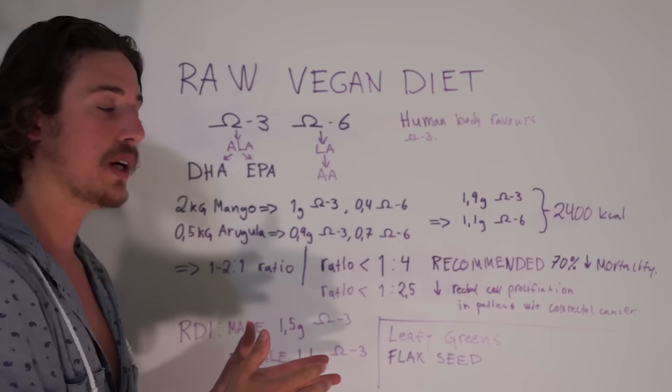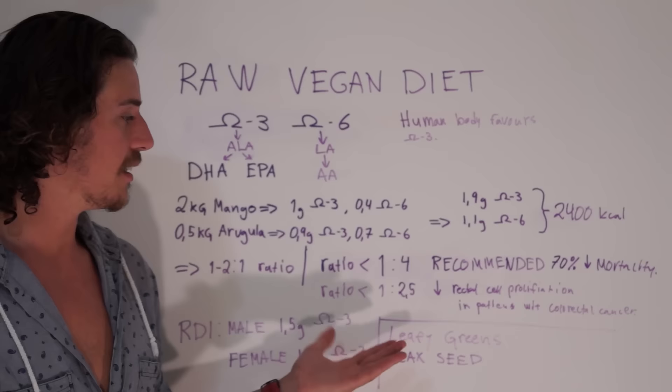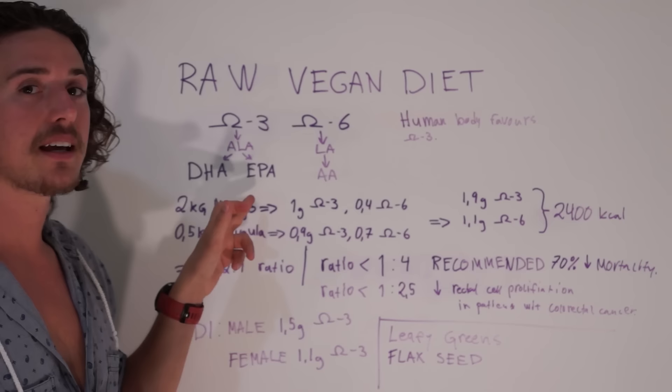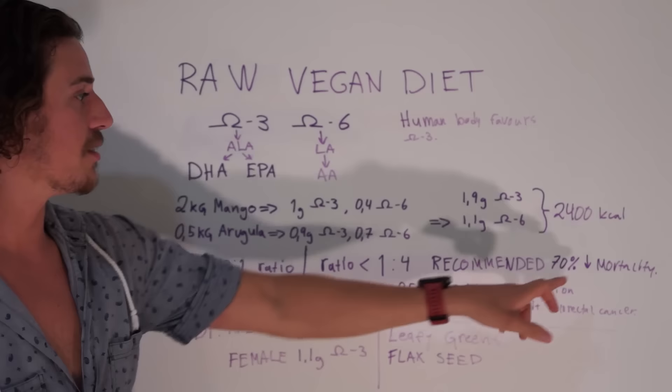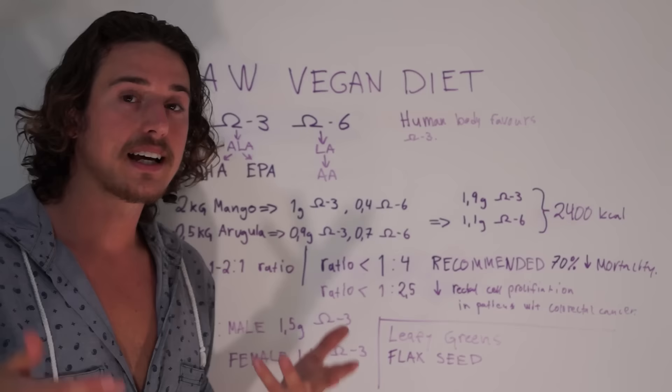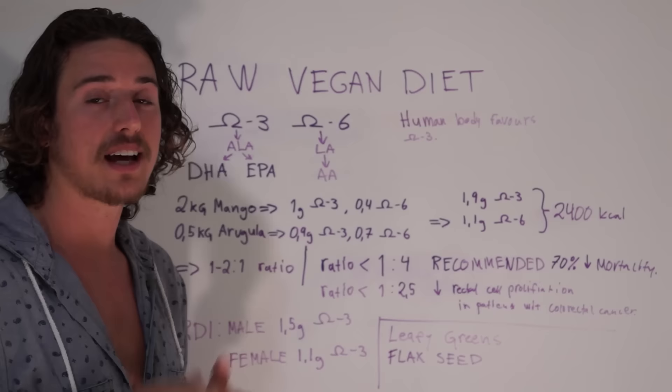As I show here, the plant-based foods with the most omega-3 are leafy greens and flax seeds. Leafy greens can be raw and flax seeds can be raw, so there is no problem whatsoever to get enough DHA and EPA. We will have a healthy cardiovascular system and decrease your mortality rate. The claim that raw vegans can suffer from omega-3 deficiency or DHA deficiency is wrong - it's not science-based.